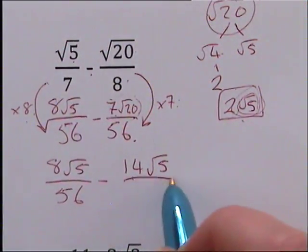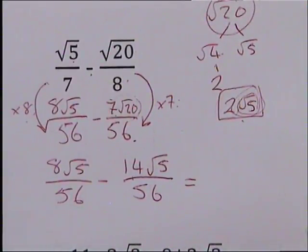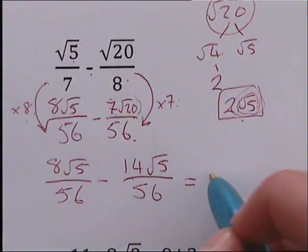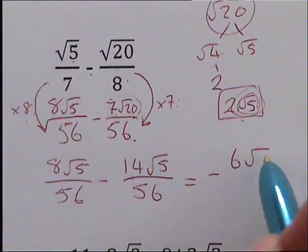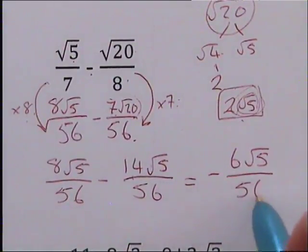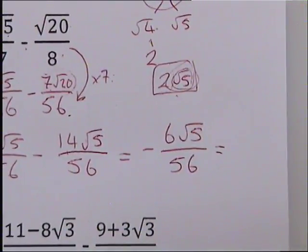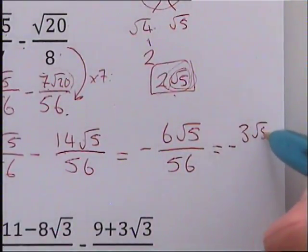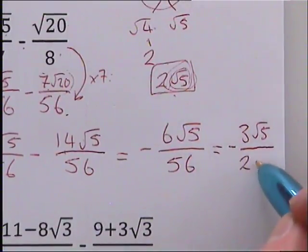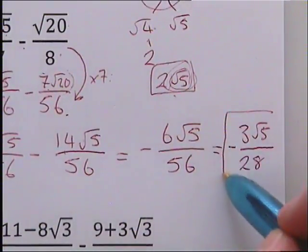It's still all over 56. So if we take that away — 8 take away 14 — that's going to give us minus 6. So we're going to have minus 6 root 5 over 56. We can simplify that down by dividing both by 2, so we end up with minus 3 root 5 all over 28. That would be your final answer — a tricky little negative one there.